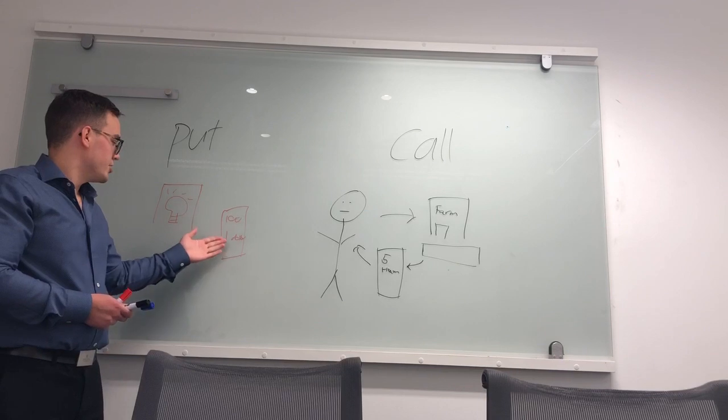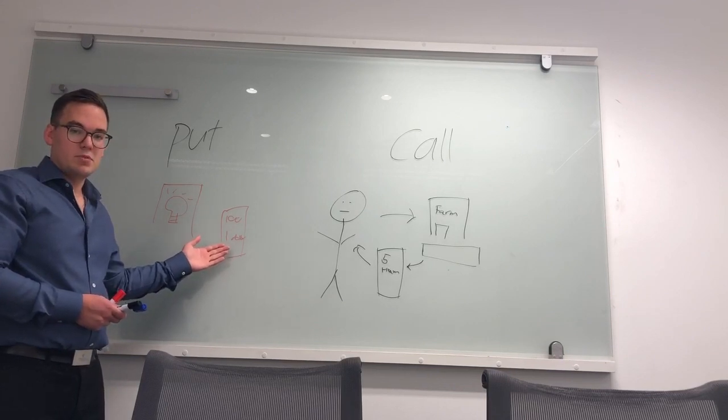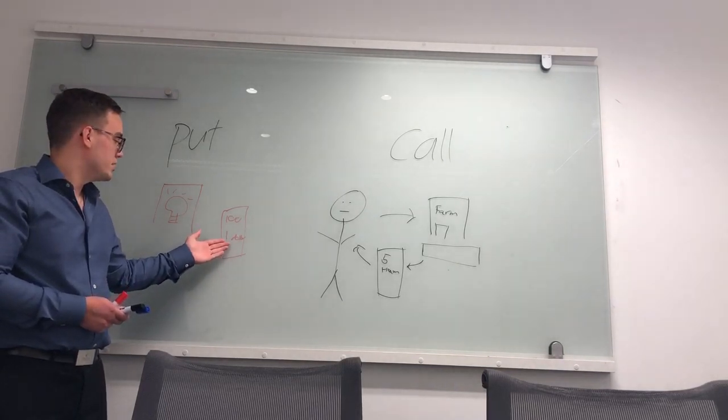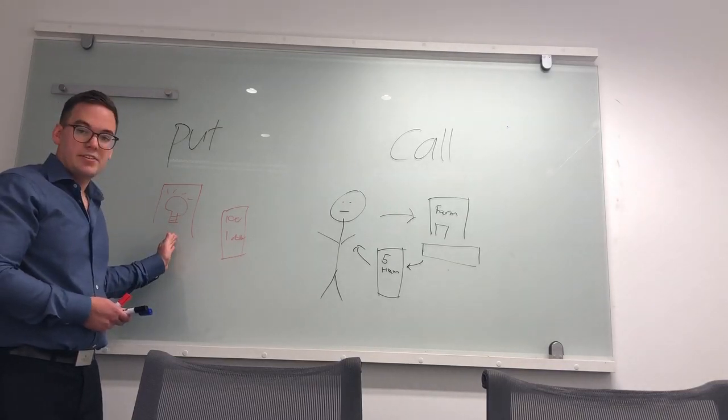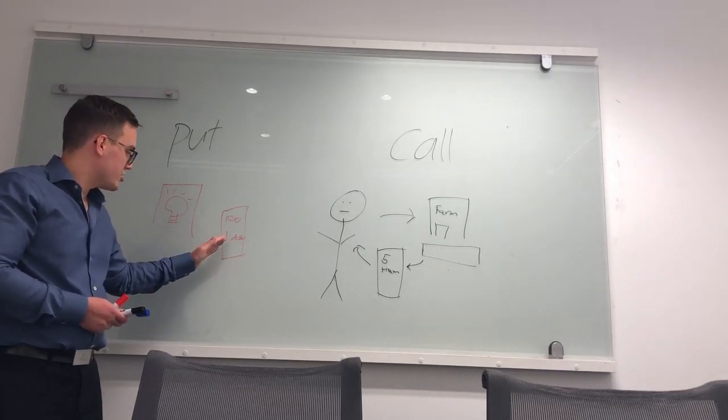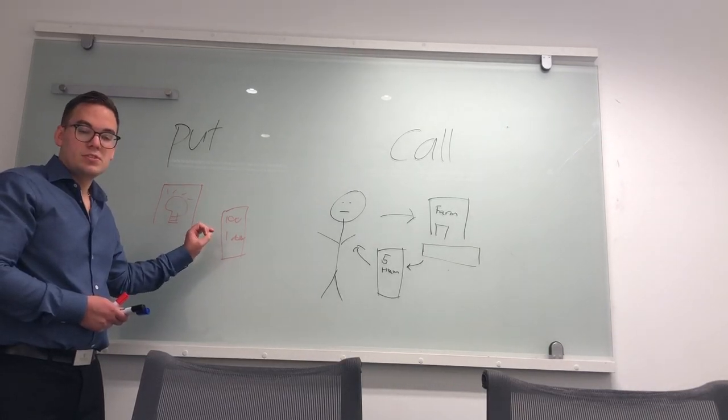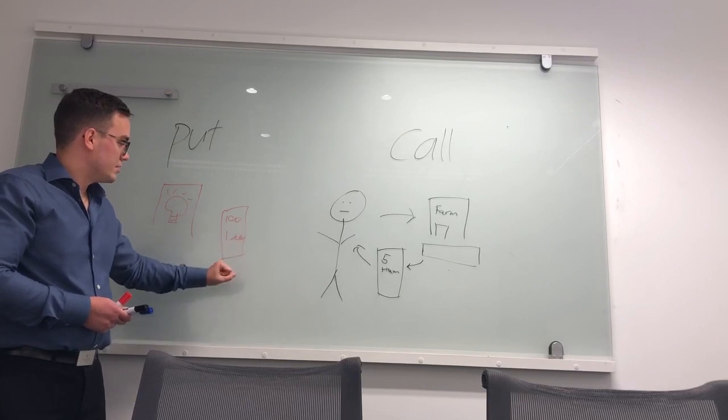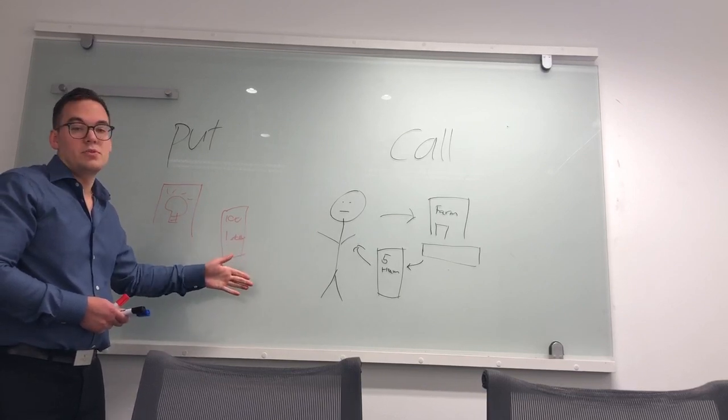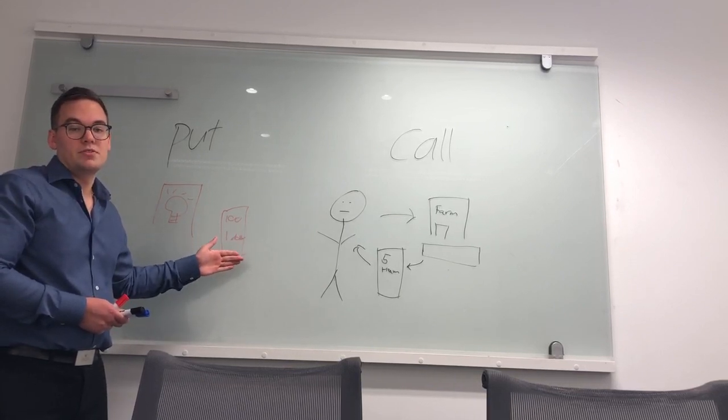However, come due date should the market value of a light bulb be below a dollar, then light bulb ltd here can choose to exercise this option and sell the light bulbs at an agreed upon price and make more than they would have if they had sold it purely to the market.